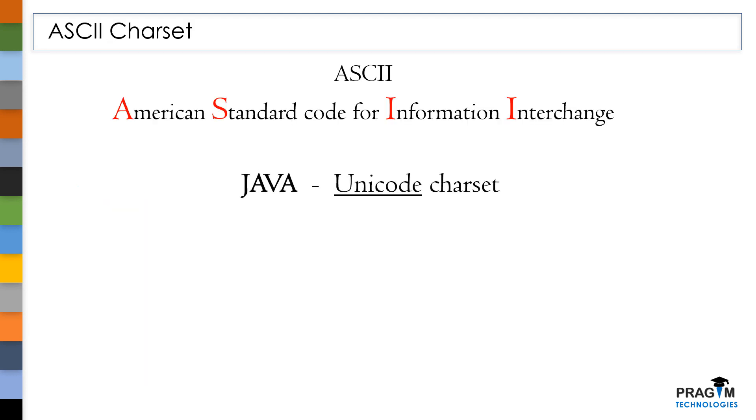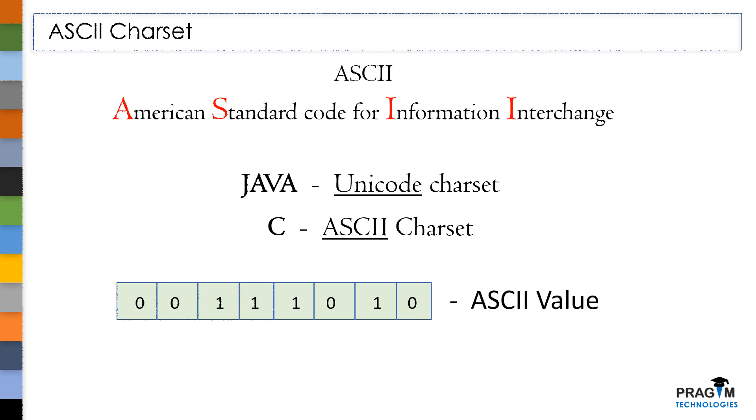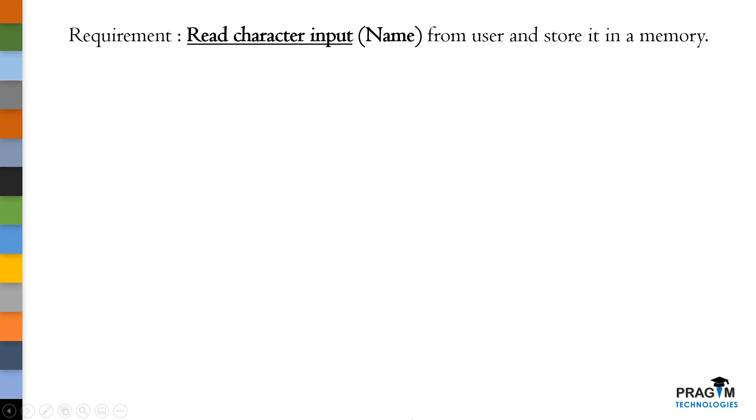Like Unicode character sheet in Java, every programming language has its own character sheet. For example, C language follows ASCII character set where an 8-bit decimal value used to represent each and every character. We call this decimal value as an ASCII value. Let's say there is a requirement where I have to read full name as an input from user and have to store it in a memory location. Here, the name we got as an input from user is George.